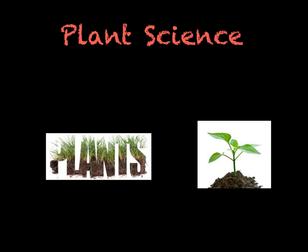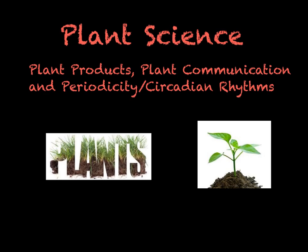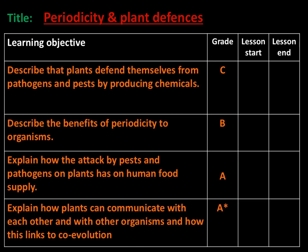This is the sixth video in the Edexcel B3 revision tutorial series. In this video we will be looking at plant science, to include plant products, plant communication, periodicity and circadian rhythms. We will look at how plants defend themselves from pathogens and pests by producing chemicals, the benefits of periodicity, the effect that pests and pathogens can have on human food supply, and finally how plants can communicate with each other and with other organisms, linking this to co-evolution.